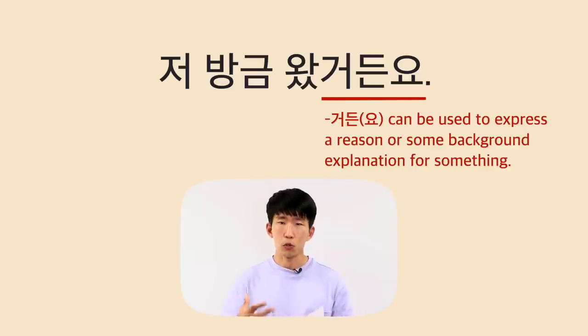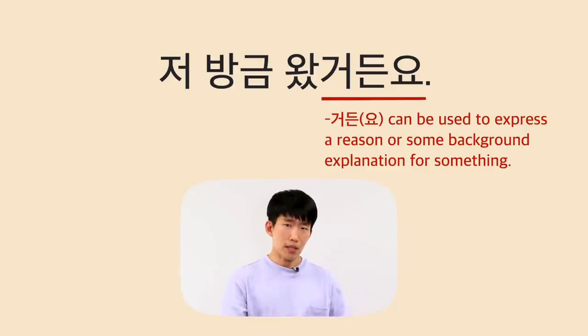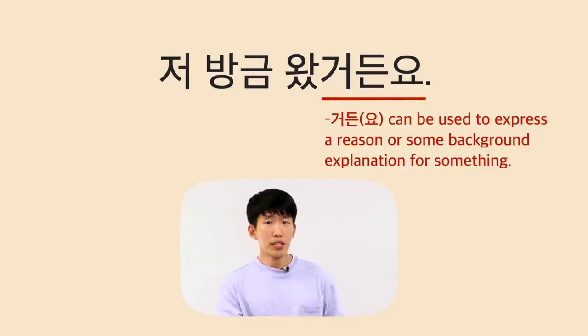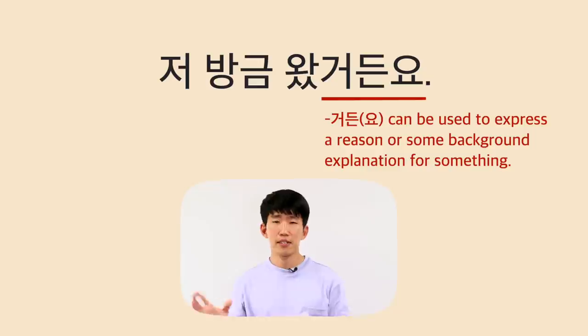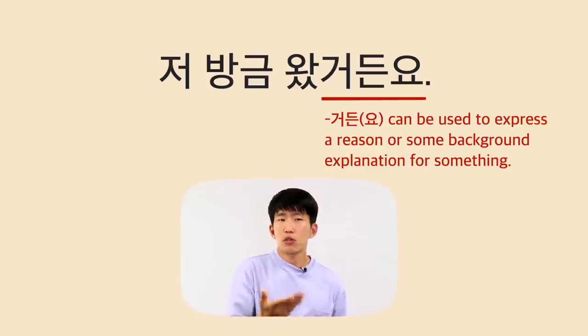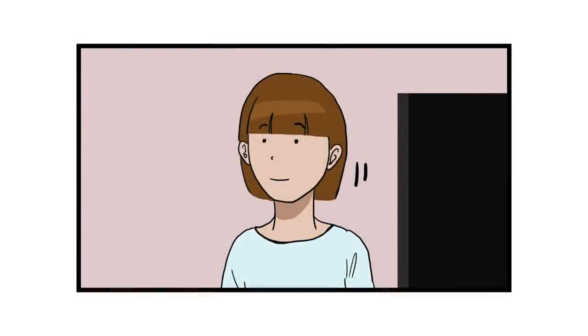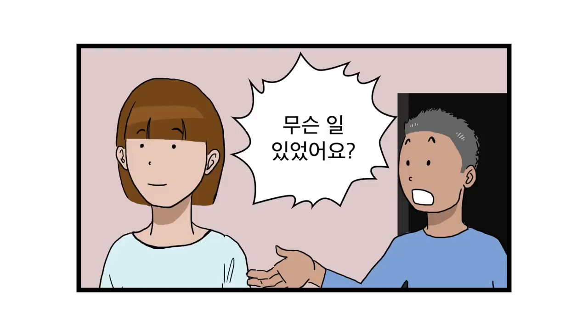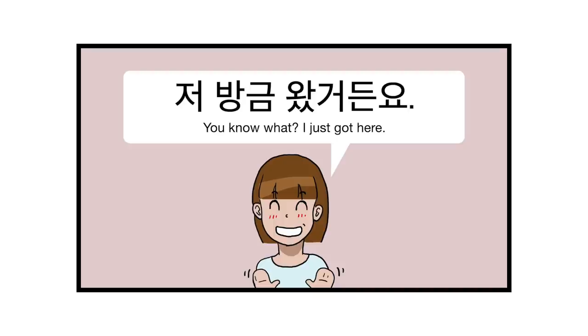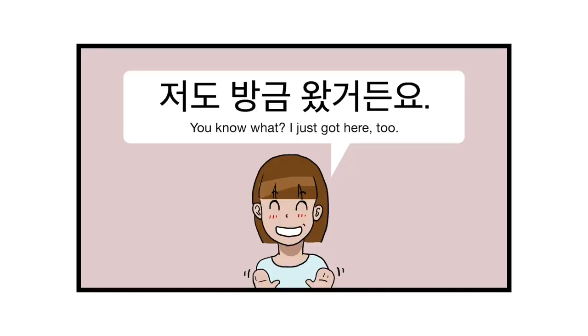거든요 is a very useful tool when you want to tell a story and make it flow naturally. When a statement can serve as background info or a foundation for the previous or next sentence, you can use 거든요 — sort of like 'let me tell you' or 'you know what.' So with 저 방금 왔거든요, imagine a situation where you don't know about something that just happened, and another person walks in and asks why you don't know. You can say 저도 방금 왔거든요 — 'I just got here too.' That's background information explaining why you don't know what happened.